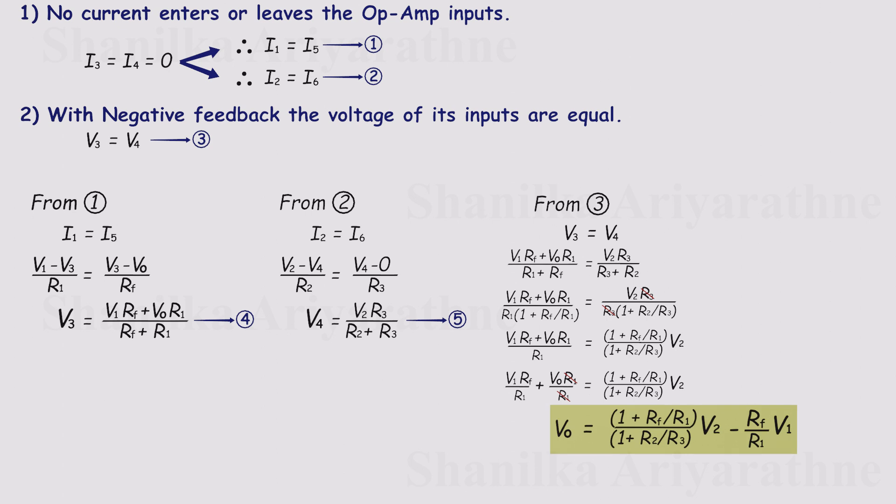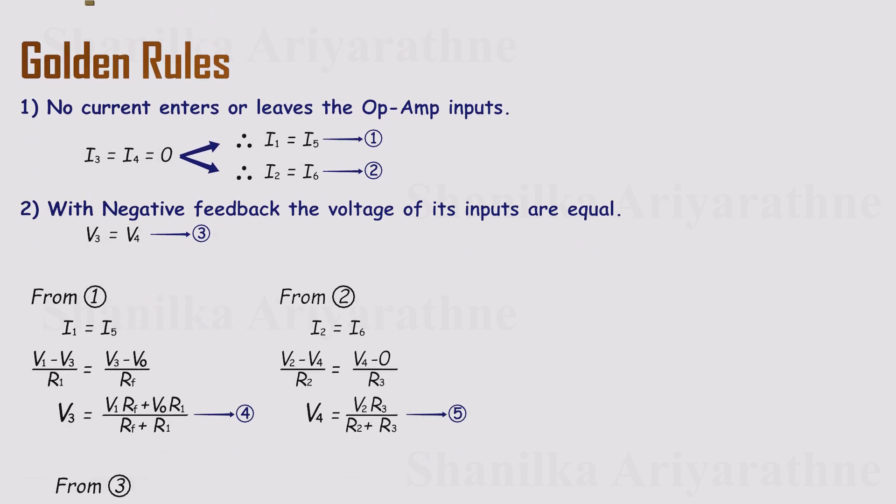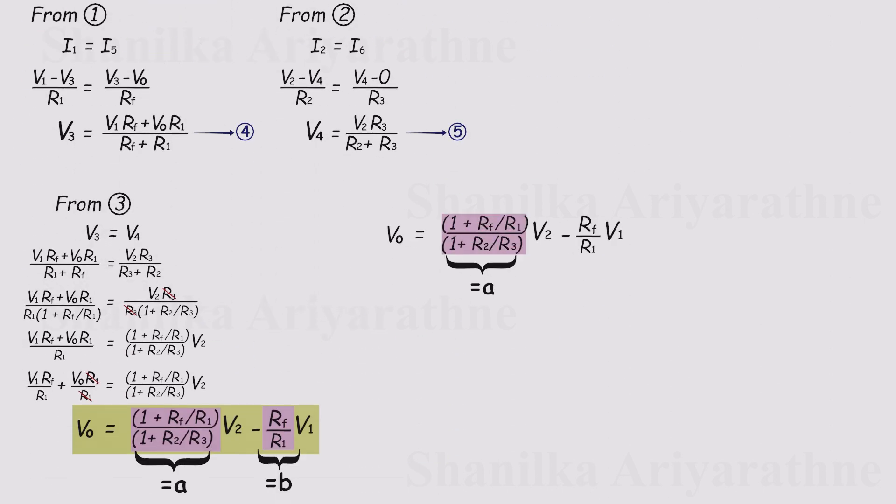Now zoom in on the weights in that formula. Call the non-inverting paths overall gain A, and the inverting paths gain B. These aren't mystery terms. They're just resistor ratios, the knobs we get to turn. In plain English, the output is a weighted difference, and those weights come straight from our resistor choices. So the whole result collapses into a clean-spoken equation. V out equals A times V2 minus B times V1. Easy, right?